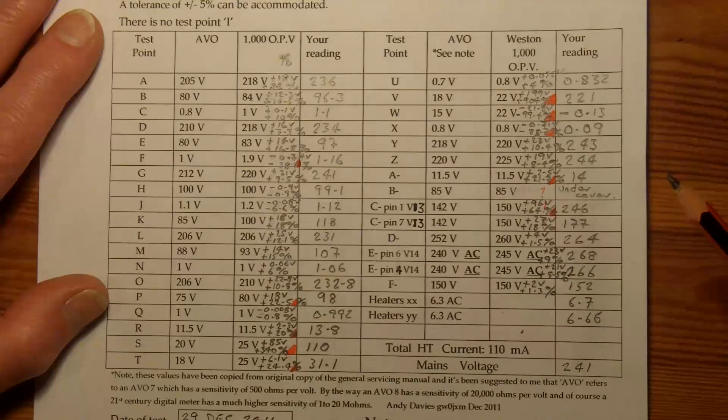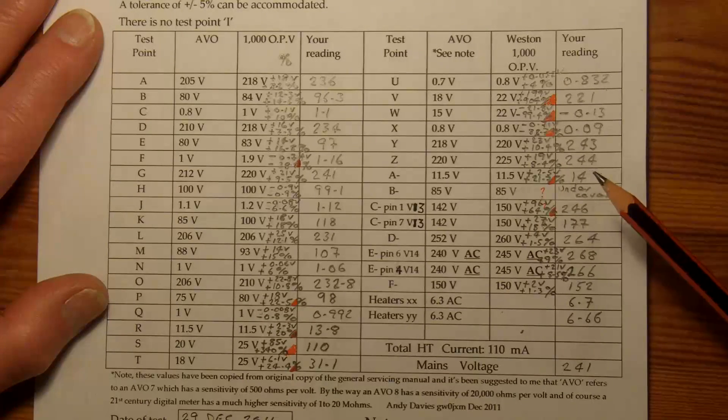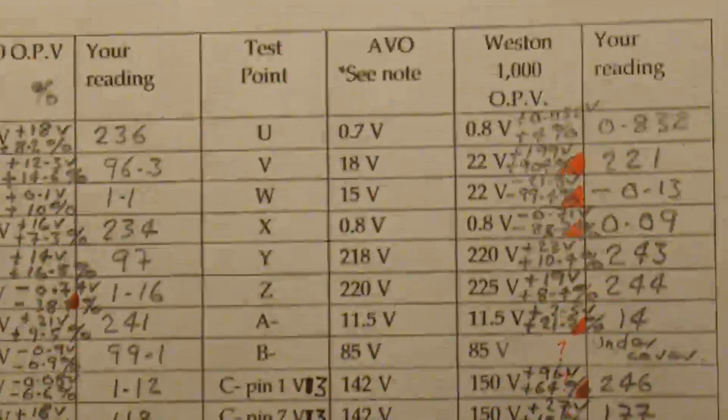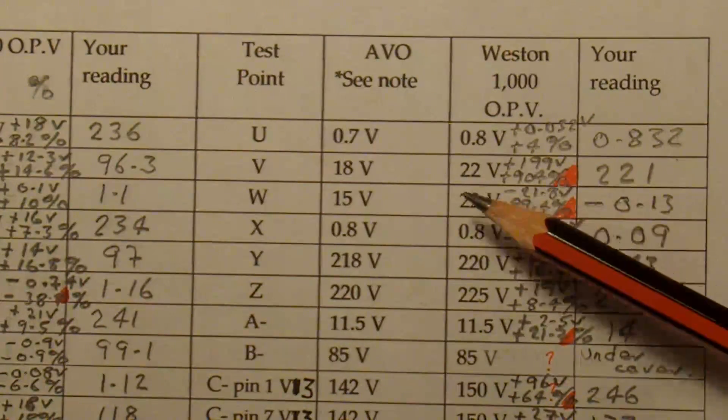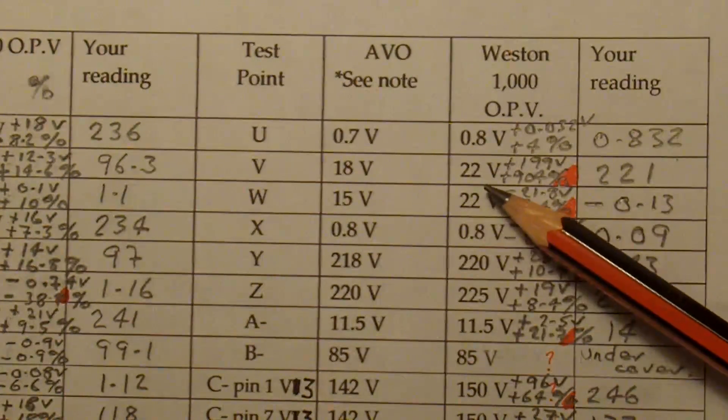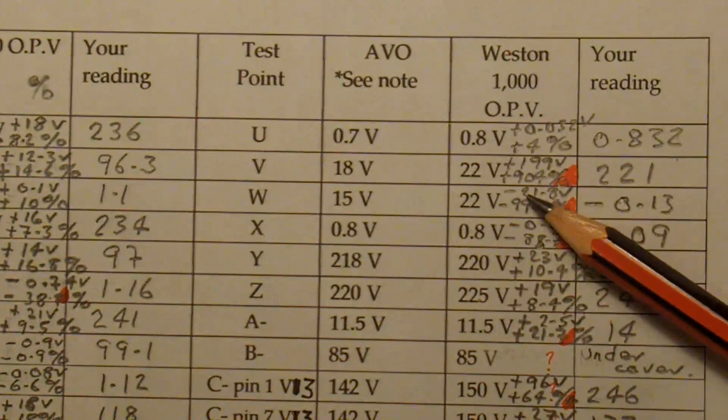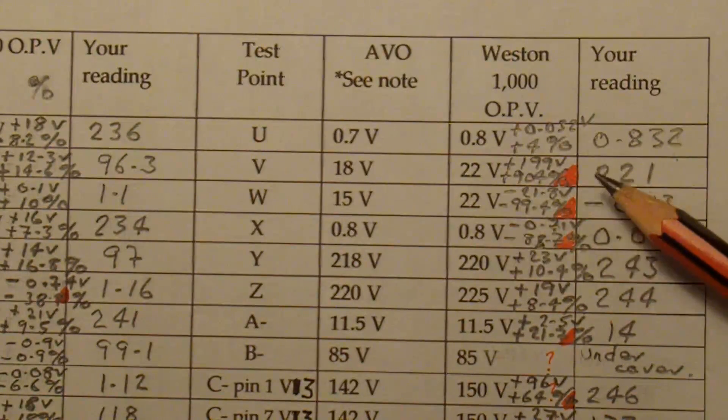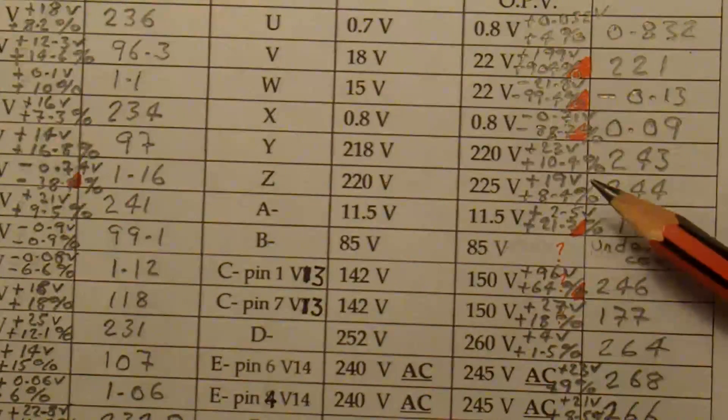What I've done is I've converted these figures into percentages and anything that's 20% above or below the anticipated figure in this column, I've just marked it with red just so it's a good point to start from. And it gets interesting when we get over here and we see test point V, we're anticipating something like 22 volts and we've actually got 221 volts, so that's plus 900%, so we've seen huge differences there.